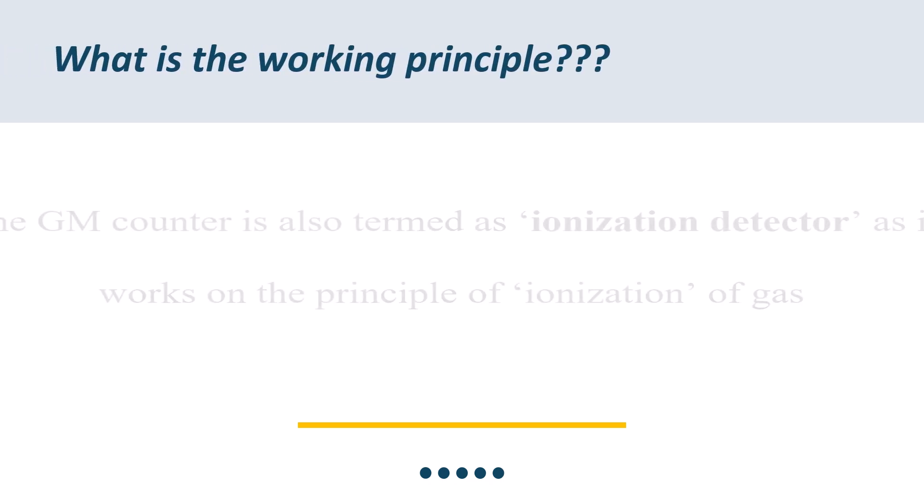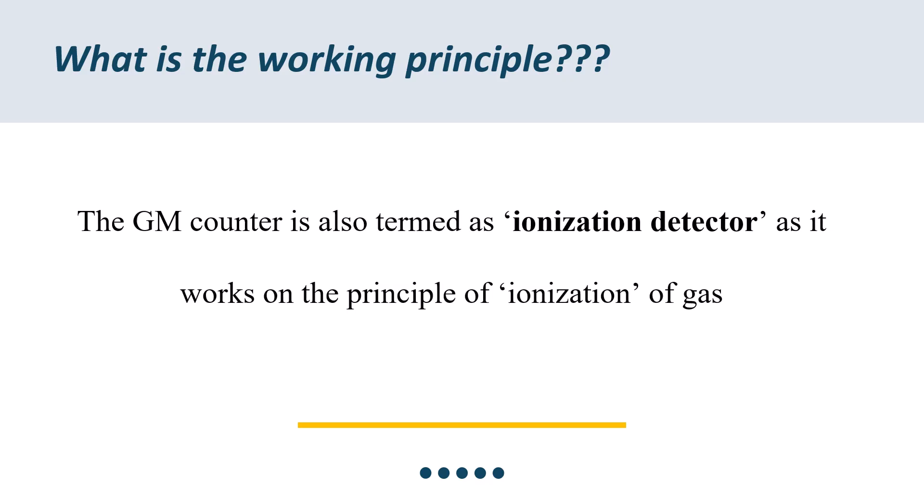The working principle of this GM tube is nothing but ionization of the radiations. GM tube is also termed as ionization detector as it works on the principle of ionization of the gas.